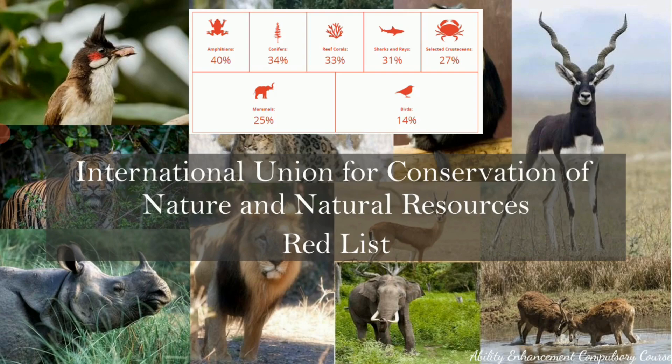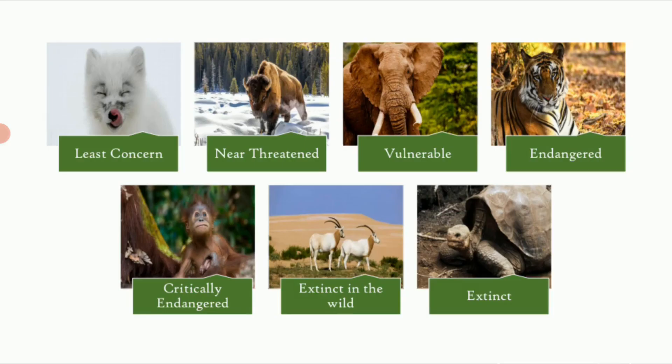The red list was first published in 1964 and the last edition was in 2018, with a reassessment update due in December 2022. So far more than 96,500 species have been assessed, and more than 26,500 of them are threatened with extinction. This list is a comprehensive resource that tells us which species are in critical condition and how we can come up with conservation strategies to protect them.